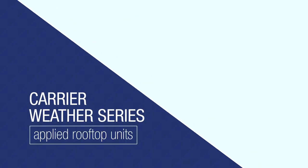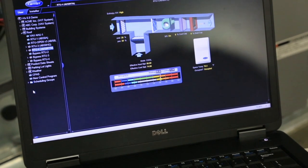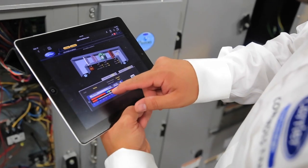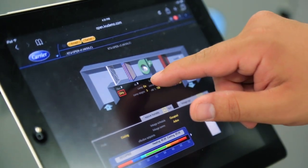Today, Carrier's applied rooftop units together with the iView open building automation system are pushing those standards even higher.